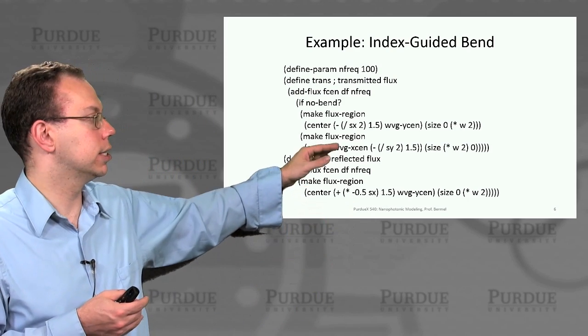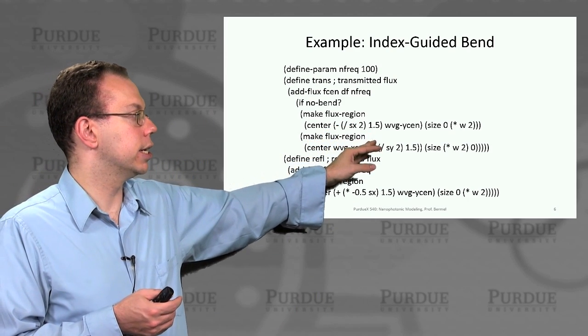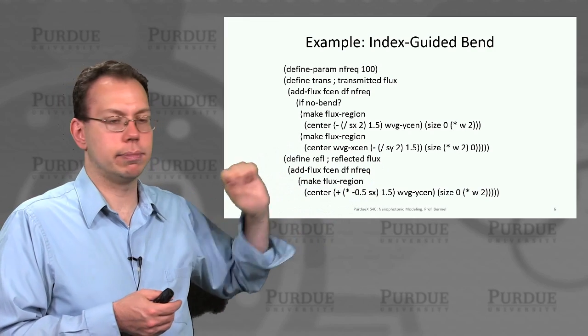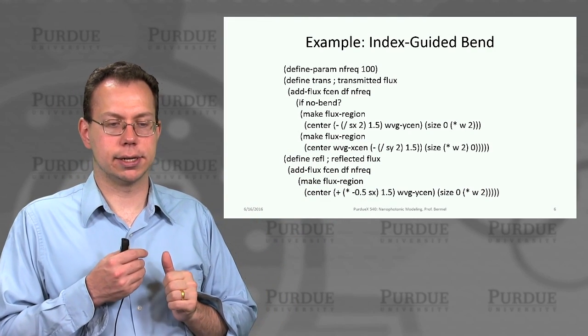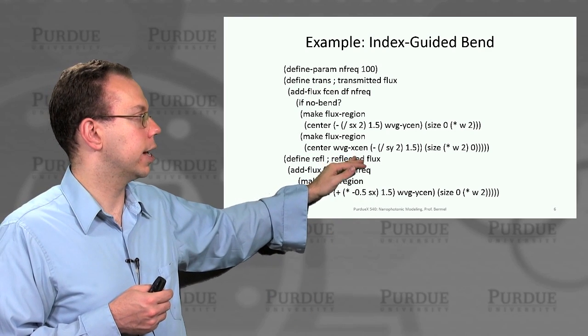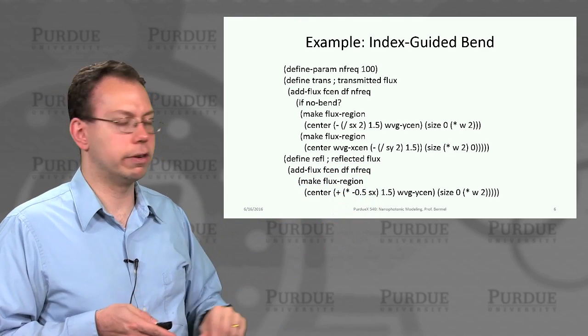And you can see the difference is just that the flux region that we're creating is centered at different location based on whether or not we have the bend present. And then of course we can also calculate a reflected flux in a similar fashion.